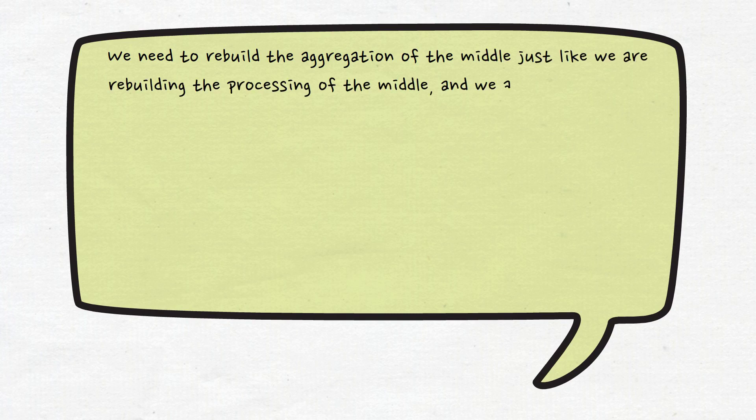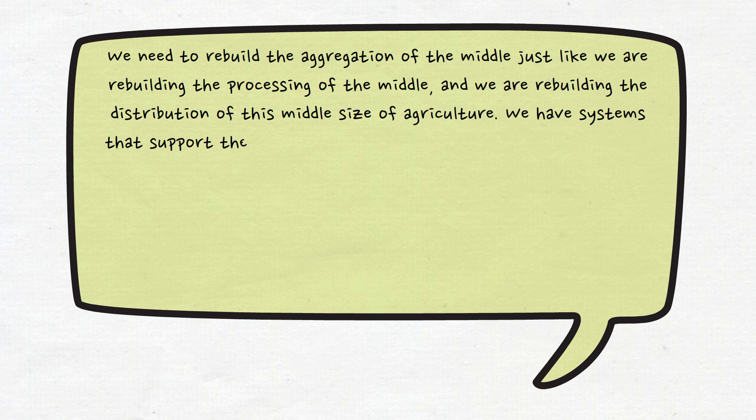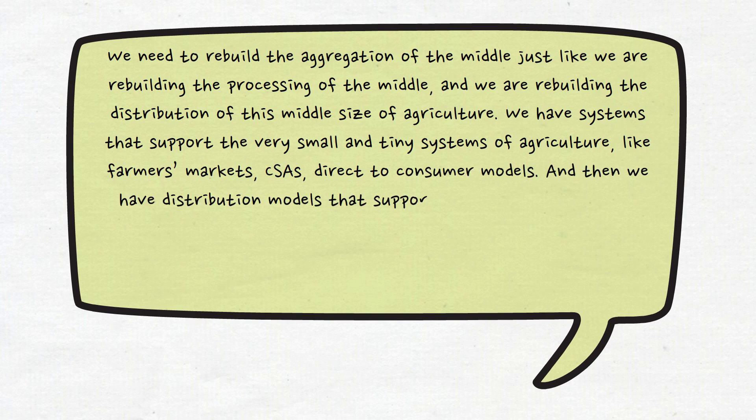We are rebuilding distribution of this middle size of agriculture. We have systems that support the very small and tiny systems of agriculture like farmers markets, CSAs, direct to consumer models, and then we have distribution models that support the giant industry. But what we've lost is this ag of the middle support.